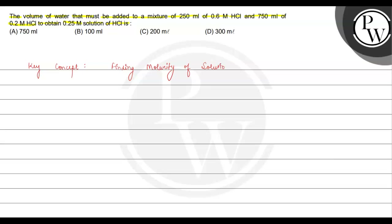We have two solutions given, both are HCl. Solution one has a molarity of 0.6 molar and volume of 250 ml. Solution two has a molarity of 0.2 molar and volume of 750 ml.